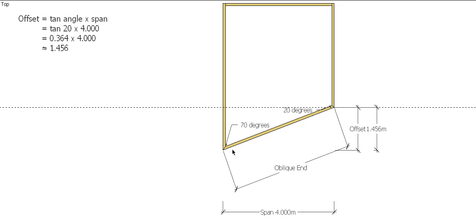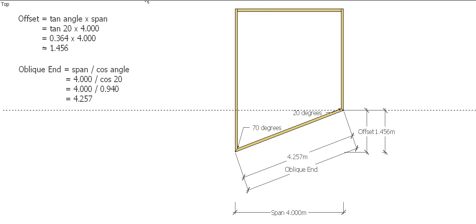And we can do that two ways. The first way would be to use Pythagoras. So we know what our span is, or this distance here, we now know what this distance here is, so we could use those two distances and Pythagoras to work out the length of the oblique end. But I prefer to use cos or the cosine rule.